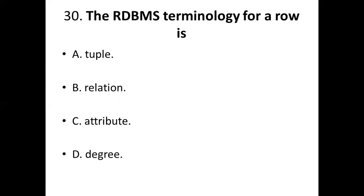Thirtieth bit. The RDBMS terminology for a row is: Option A, table. Option B, relation. Option C, attribute. Option D, degree. Answer: Option A, table.